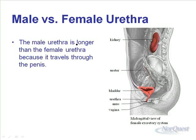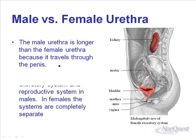The male and female urethras are a little different. The male urethra is longer than the female urethra because it has to travel through the penis. So the urethra is part of both the excretory system and the reproductive system in males — you'll learn about the reproductive system in Bio 30. In females the systems are completely separate. Here we have a sagittal view of the female excretory system.